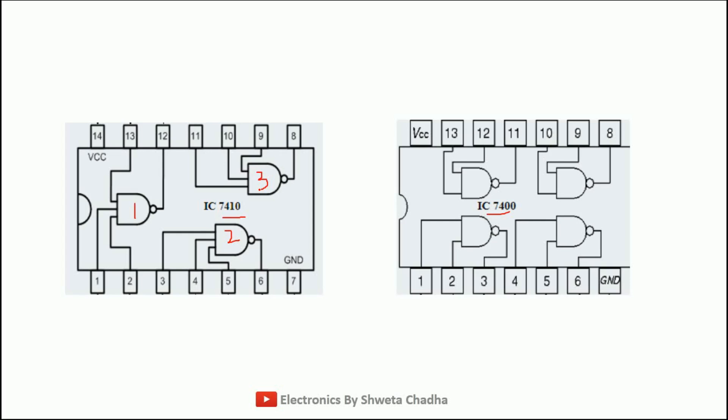On the other hand, if we talk about IC 7400, we can have a total of 4 gates, each with 2 inputs. Pin 1 and 2 are input, pin 3 is output. Pin 4 and 5 are input, pin 6 is output. Then pins 9 and 10 are input, pin 8 is output. And pins 12 and 13 are input, pin 11 is output. Do not forget to connect VCC and GND at pin number 14 and pin number 7 respectively to both ICs.